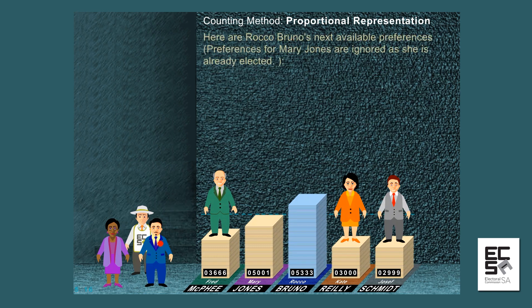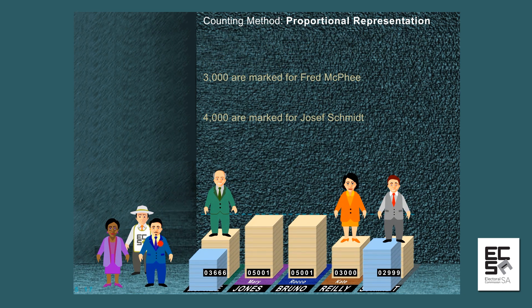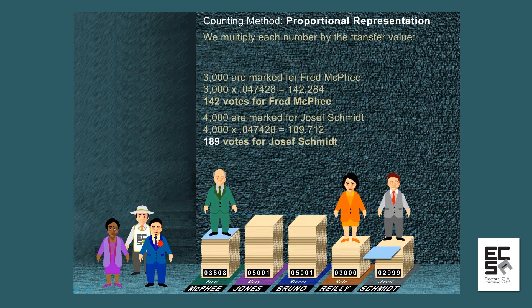Here are Rocco Bruno's next available preferences. Preferences for Mary Jones are ignored as she is already elected. 3,000 are marked for Fred McPhee and 4,000 are marked for Joseph Schmidt. Applying the transfer value: 3,000 times 0.047428 equals 142.284, giving 142 votes for Fred McPhee; 4,000 times 0.047428 equals 189.712, giving 189 votes for Joseph Schmidt.